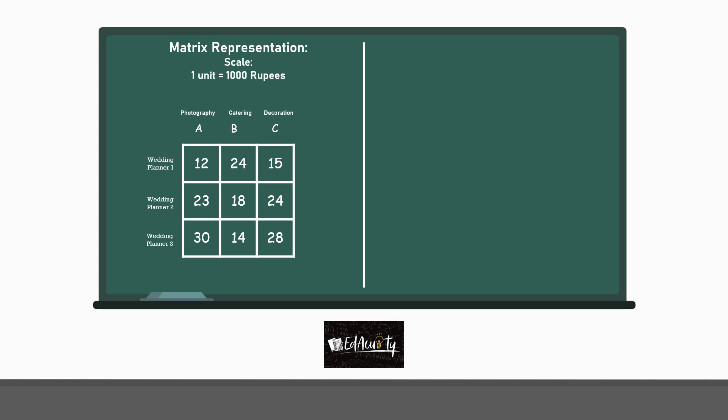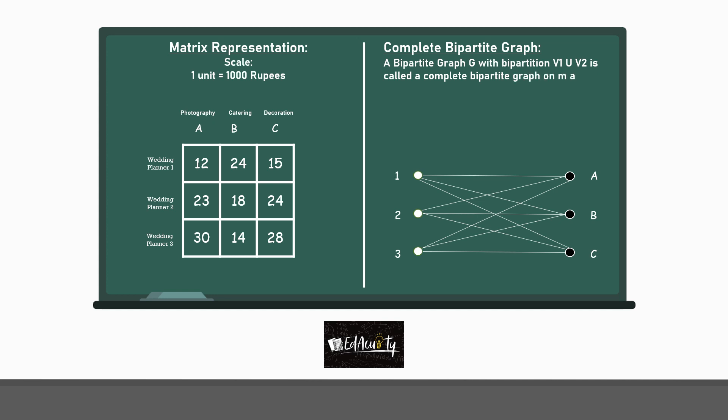Hungarian method can also be applied by considering the matrix as a bipartite graph where the vertices of the graph are partitioned into two sets and the edges are associated with the cost of each service. In our case, one set of the vertices will be of the wedding planners and the other set of the services that they provide. Also, it is a complete bipartite graph where every vertex of one set is connected to every vertex of the other set.